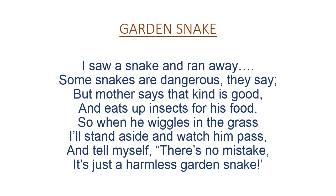The poet says: I saw a snake and ran away. He saw a snake and he ran away. Some snakes are dangerous, they say. But the mother of the poet says that that kind is good — some are good and eats up insects for his food. There are some who only eat insects for their food. So when he wiggles in the grass, I'll stand aside and watch him pass and tell myself there's no mistake — it's just a harmless little garden snake.